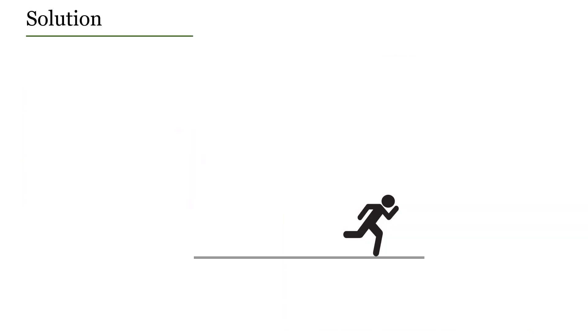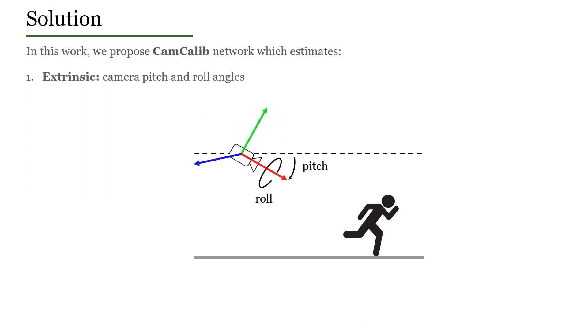To address this, we train a neural network called CAM-CALIB to estimate the following camera information directly from an input image: the camera pitch and roll angles, and the vertical field of view.